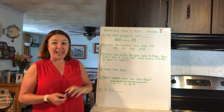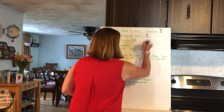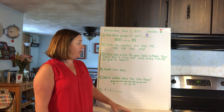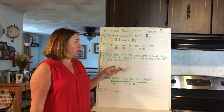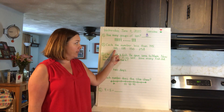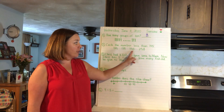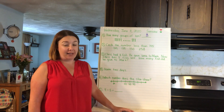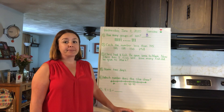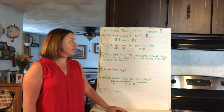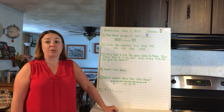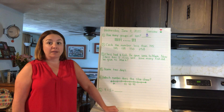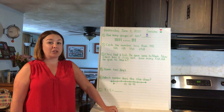Number two: circle the number less than 145. Your choices are 145, 139, 150, and 258. On your paper, write the number that is less than 145. Just like when we're comparing numbers with two digits, now we have three digits — start with the hundreds column, then look at the tens column, then the ones, and see which number is less.